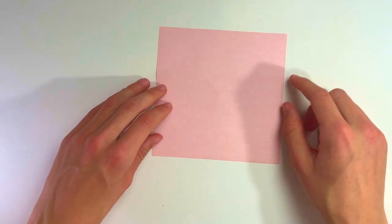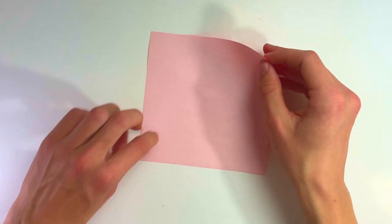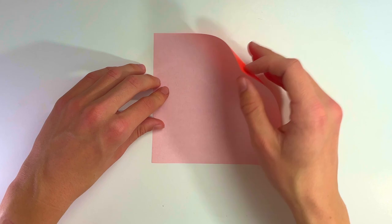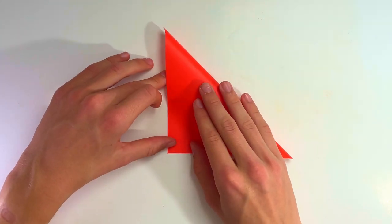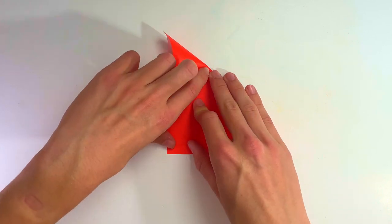First, take this top right point and bring it down to that bottom left point. You want to be really accurate at the beginning—it's very important because that way your final heart will be way cleaner.